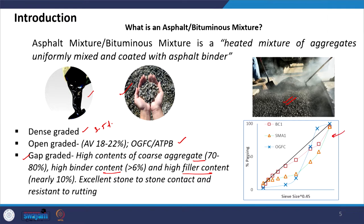These mixtures are plotted corresponding to the maximum density line, where the y-axis shows percent passing and the x-axis is the normalized sieve size raised to the power 0.45. The dark black line is the maximum density line. The brown line indicates a well-graded dense gradation. The gap-graded mix is also shown, where the intermediate size is not prominent. Open-graded friction courses represent a poorly-graded mixture with aggregates mostly of single size.